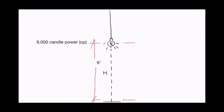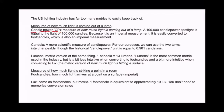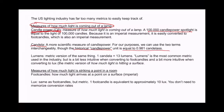With lighting, probably more than most other areas of building science, there are a few too many things to keep track of. We started with candle power, which is a measure of how much light comes out of a lamp — based on what a candle would give off. We still use it for spotlights. Candela is a more scientific measure: one historical unit of candle power equals 0.981 candelas.